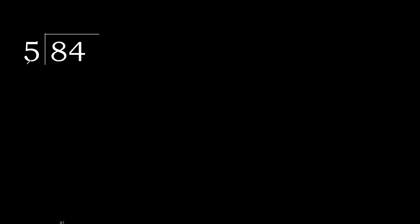84 divided by 5. Starting with 8 — 5 multiplied by which number is nearest to 8 but not greater? 5 multiplied by 2 is 10, which is greater. 5 multiplied by 1 is 5, which is not greater. 8 minus 5 is 3.